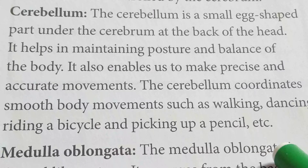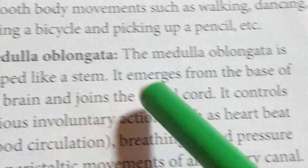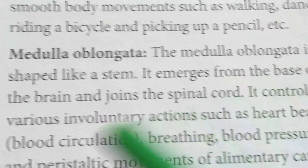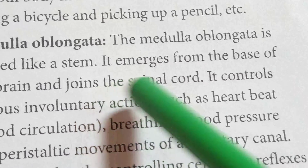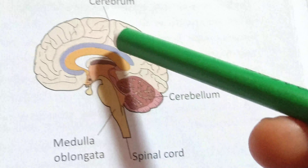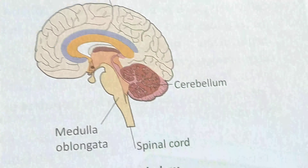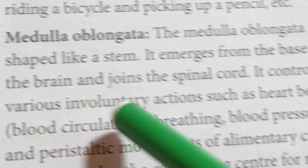The medulla oblongata is shaped like a stem — that's why it is also known as the brain stem. It emerges from the base of the brain and joins the spinal cord, connecting the brain with the spinal cord.